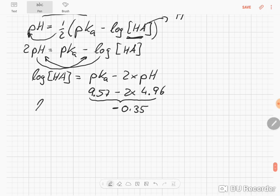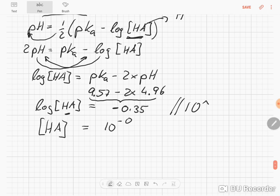So our log of the acid concentration equals negative 0.35. And in order to get the acid concentration, what we need to do to get rid of the log is we need to take both sides 10 to the power of. So we have our acid concentration equals 10 to the power of minus 0.35.